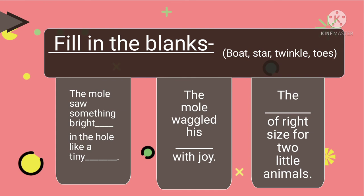The second exercise is filling in the blanks. First: The mole saw something bright — dash — in the hole, like a tiny — dash. Second: The mole waggled his — dash — with joy. Third: The — dash — was of the right size for two little animals. You have clues to help you fill in the blanks.